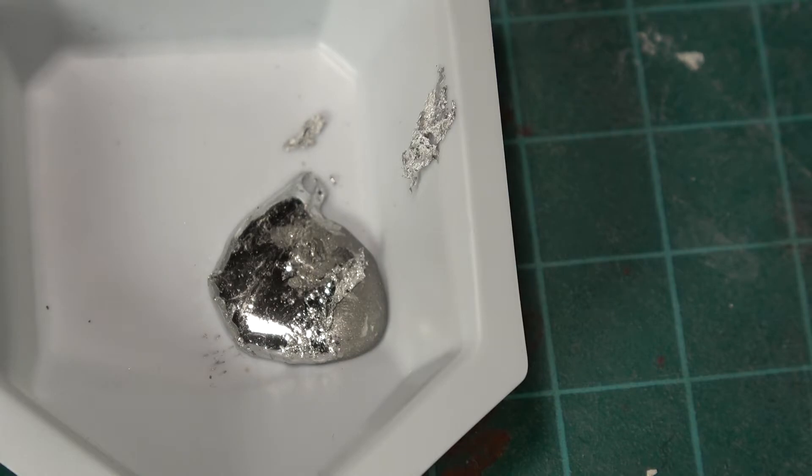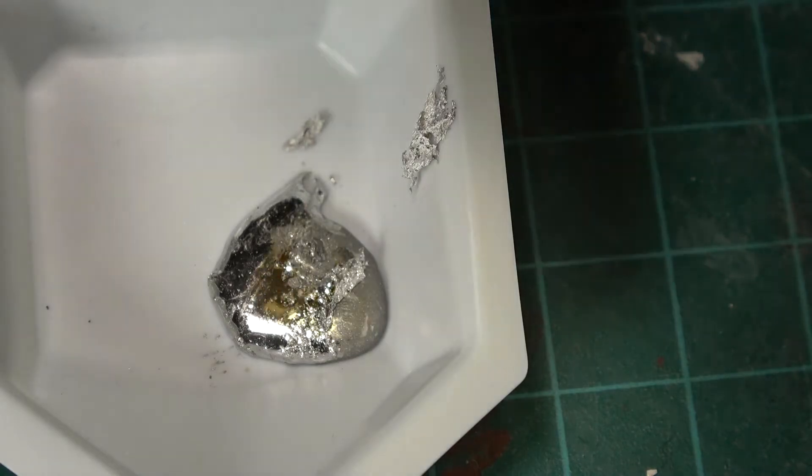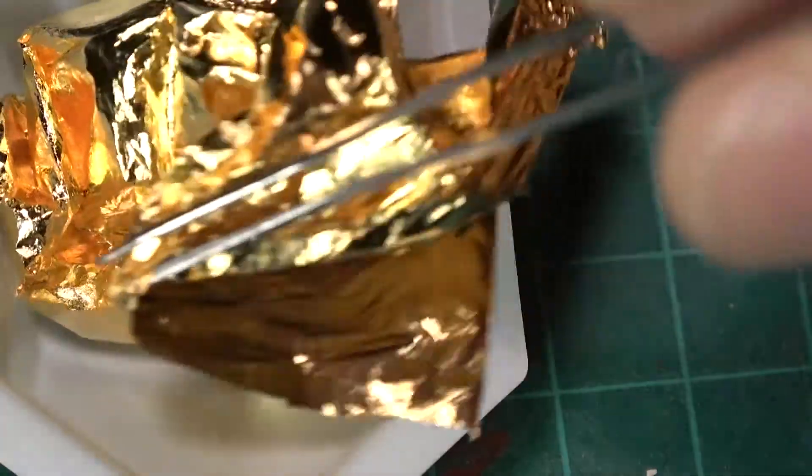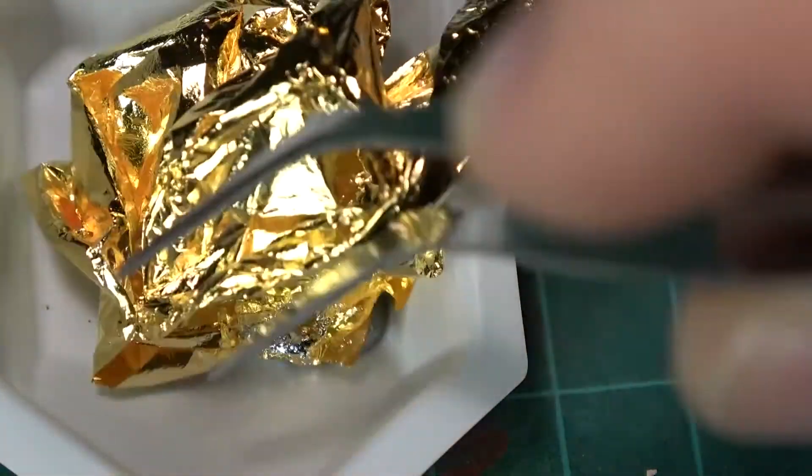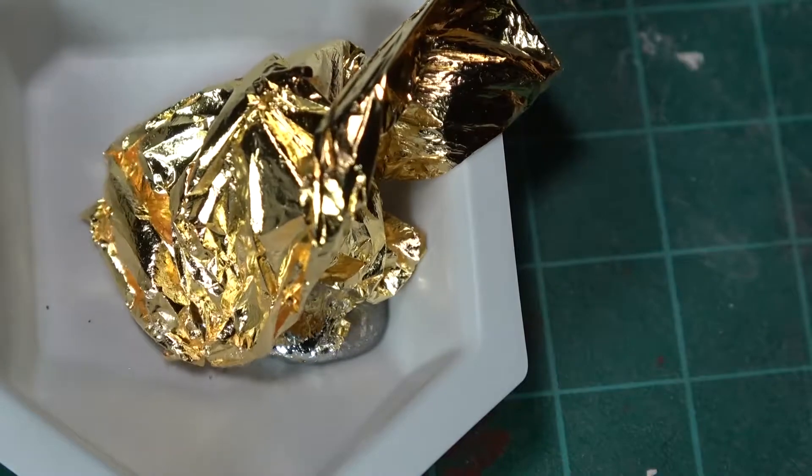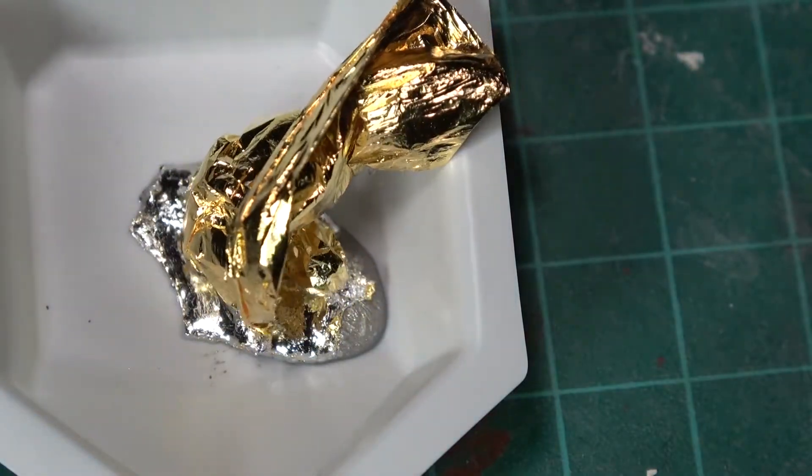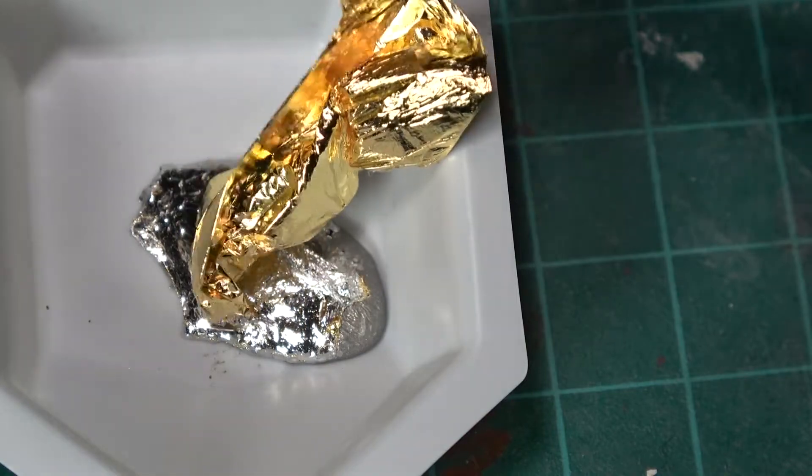So mercury actually has the ability to dissolve in many metals. Gold and silver being the best. Iron is pretty resistant to it, which is why in the old days you would see mercury being stored in iron flasks. It's also resistant to zinc and platinum I believe.